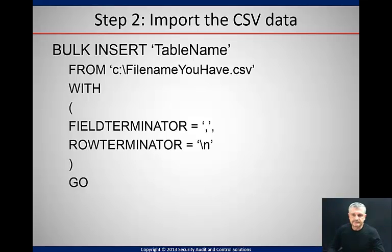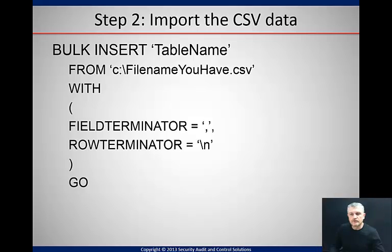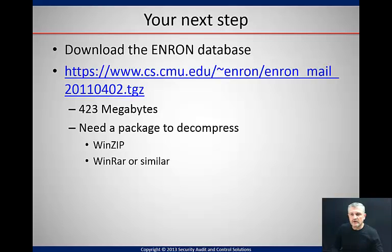Once you've created a table and know the field layout, the command in Microsoft SQL is BULK INSERT. The syntax is: BULK INSERT [table name] FROM 'C:\filename.csv' WITH (FIELDTERMINATOR = ',', ROWTERMINATOR = '\n'). This command will import the data. The key requirement is that the fields must be defined in the table to match the comma-delimited CSV file exactly — otherwise you may have errors. It is a somewhat manual process.